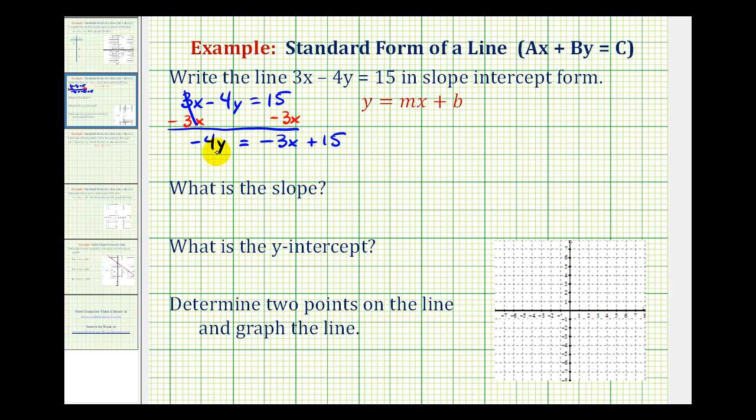And then the last step here to solve this equation for y would be to divide everything by negative 4. So we'll divide this by negative 4, divide this by negative 4, and divide this by negative 4. And now when we simplify this, the equation will be in slope-intercept form.